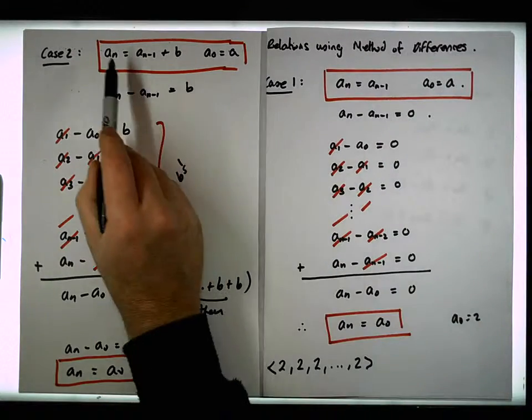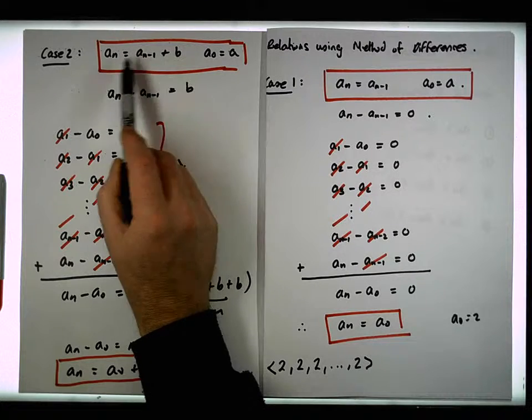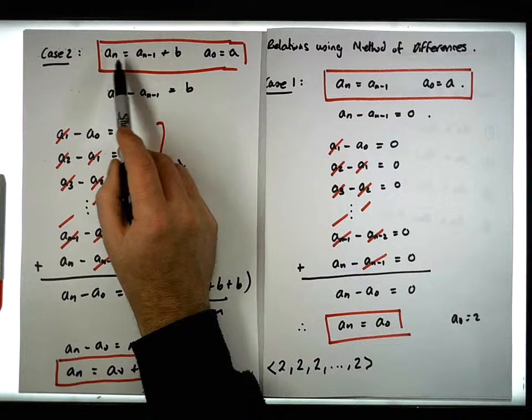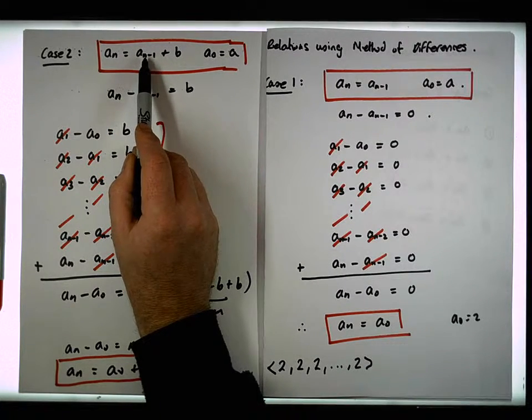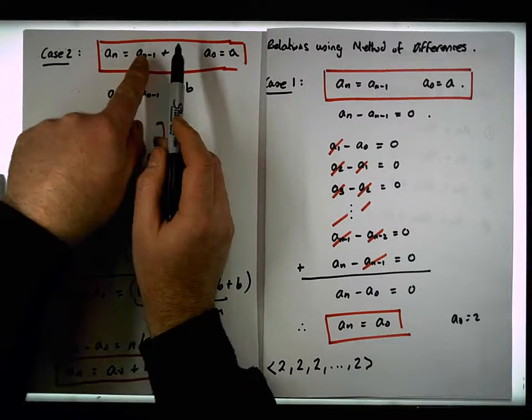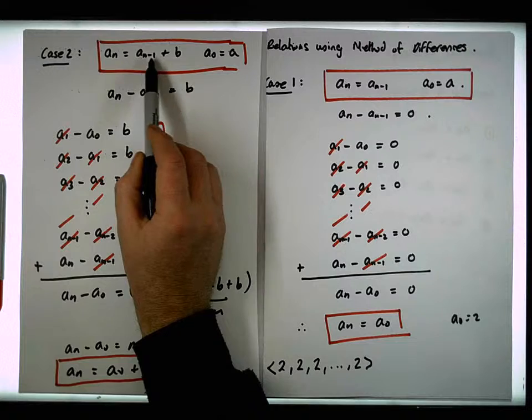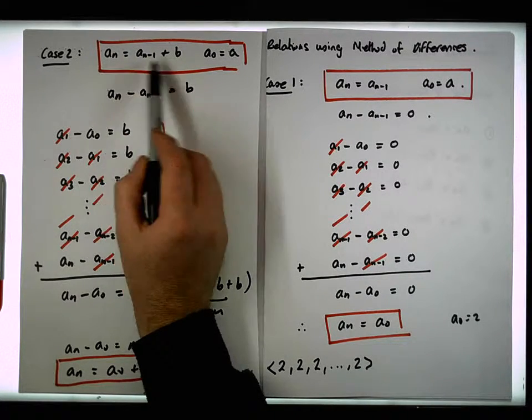Whereas over in this particular situation here, once again, what we have is we have a recurrence. The recurrence is also linear because each term with respect to a position in the sequence is listed on its own to the power of one.